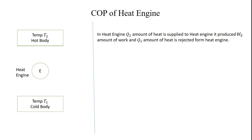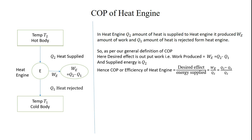In the heat engine, Q2 amount of heat is supplied from the high temperature reservoir. The engine produces W amount of work. Since it is not possible to convert all of Q2 into mechanical work, Q1 amount of heat is rejected, so W = Q2 − Q1. As per our general definition of COP, the desired effect is the output work W = Q2 − Q1, and the supplied energy is Q2. Hence, COP of heat engine (also called efficiency) = (Q2 − Q1) / Q2.